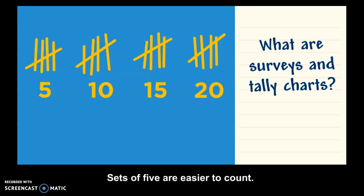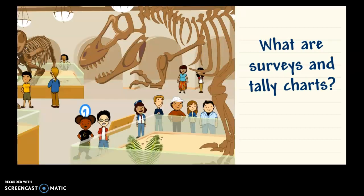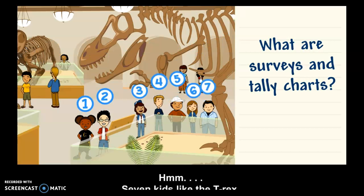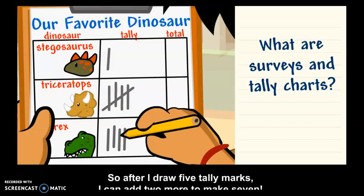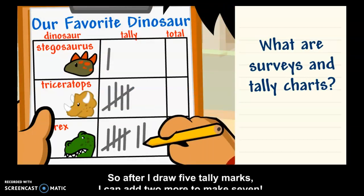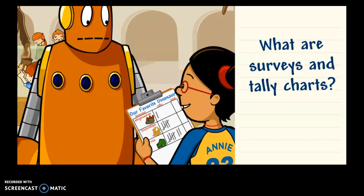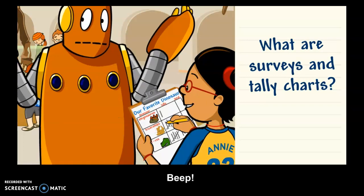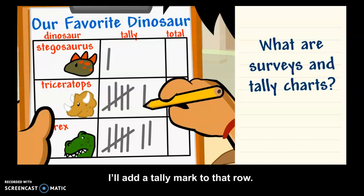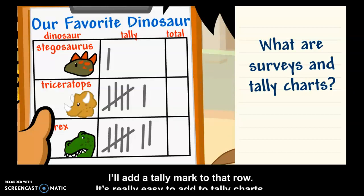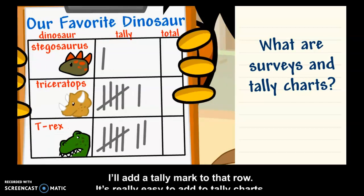Sets of fives are easier to count. Seven kids like the t-rex. So after I draw five tally marks, I can add two more to make seven. I forgot to vote. My favorite dinosaur is the triceratops. I'll add a tally mark to that row. It's really easy to add to tally charts.